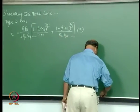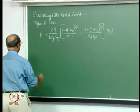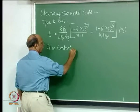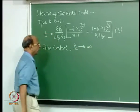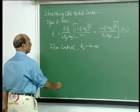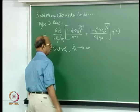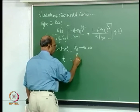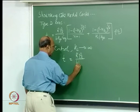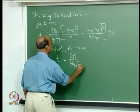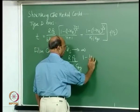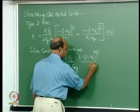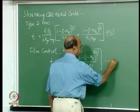As usual, we can simplify this for individual cases. If it is film control, we know that K_s goes to infinity, meaning the rate of reaction is very, very large. So this term will vanish because it is 1/K_s, which is very large. Then we have T_film equal to rho_B over b·K_g·C_Ag plus 1 divided by (3n+1). This is equation 15.